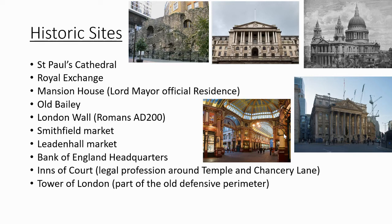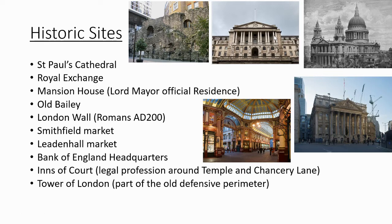There are lots of historic sites within the City of London: St Paul's Cathedral, the Royal Exchange, Mansion House which is the Lord Mayor's official residence, the Old Bailey courtrooms, and London Wall. There are little fragments of the Roman wall just dotted around the city — remains of the wall built around AD 200. Also Smithfield Market, Leadenhall Market, the Bank of England headquarters, the Inns of Court, and the Tower of London, which was part of the old city walls around the perimeter.